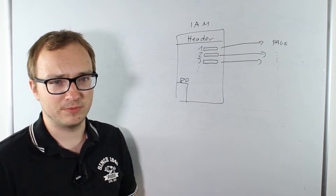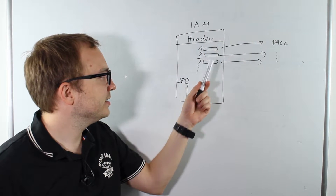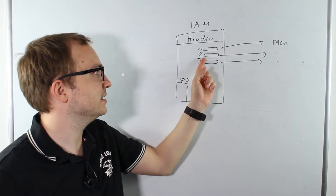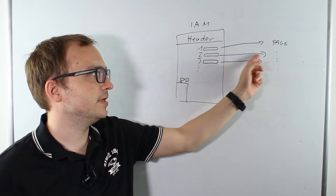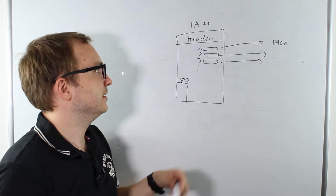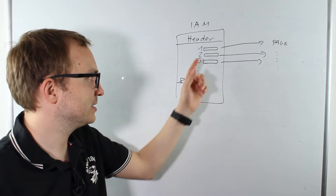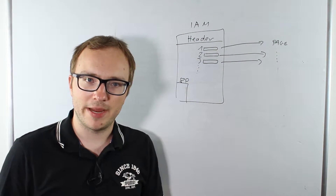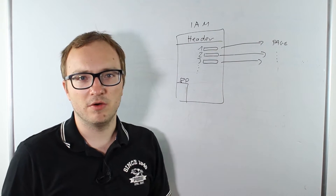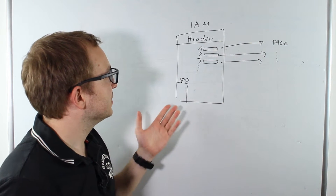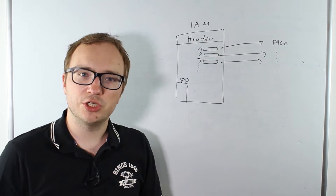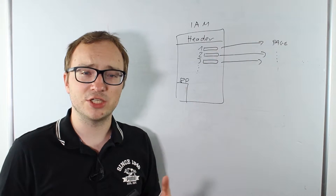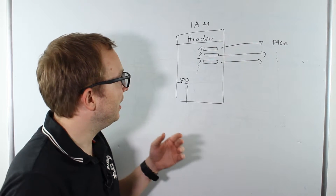The IAM page: the first extent has a pointer to the first page of that extent, and the second entry would be the pointer to the first page of the second extent, and so on. Since we know an extent has exactly eight pages, SQL Server knows to iterate those one after another. This is the IAM page, and for insertions in heaps it's very crucial to know that we only have the IAM page as an organizational structure — we have nothing else.